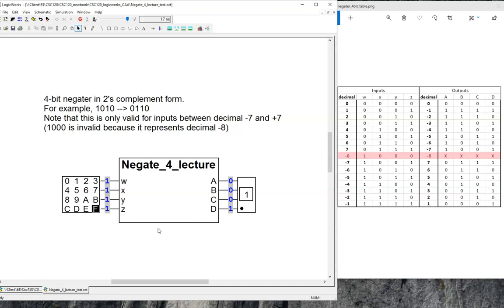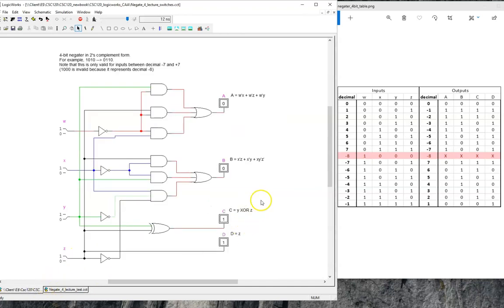This concludes our example of designing a 4-bit negator using the formal procedure. Are there other methods of designing combinational circuits? Absolutely. We'll explore them in future lessons.